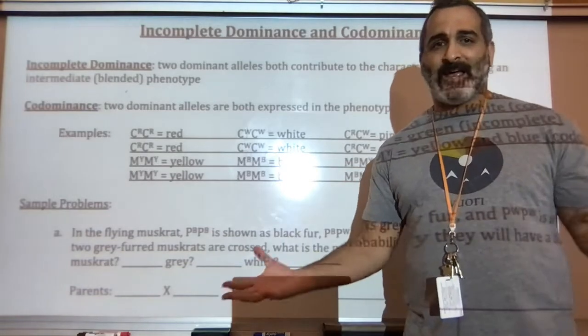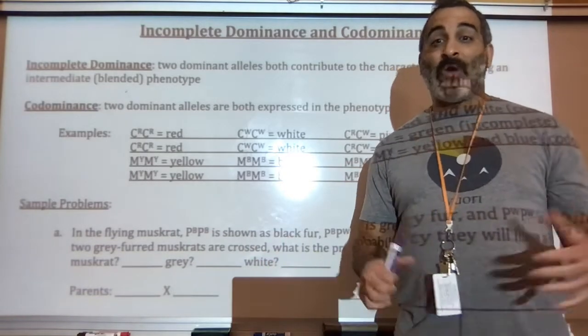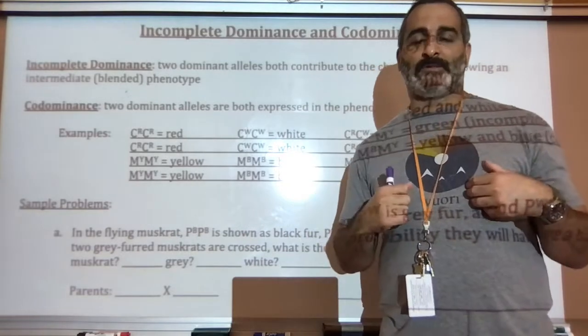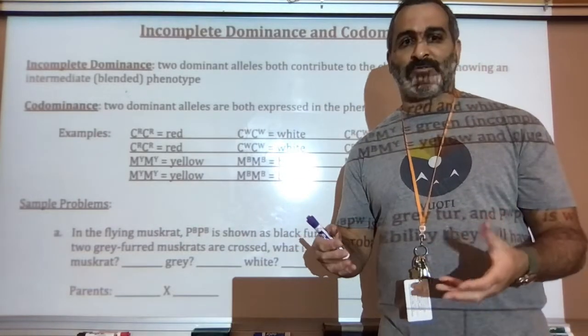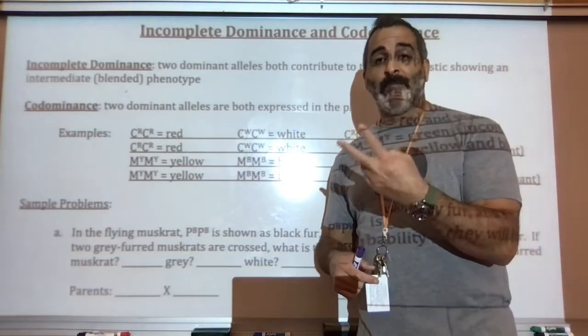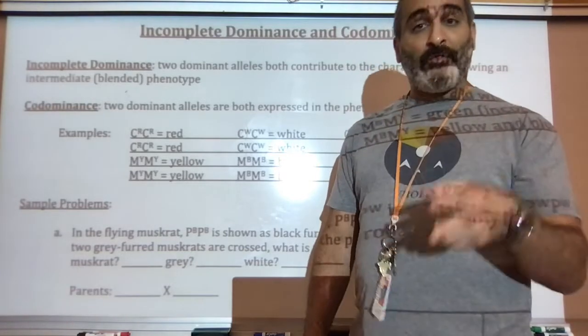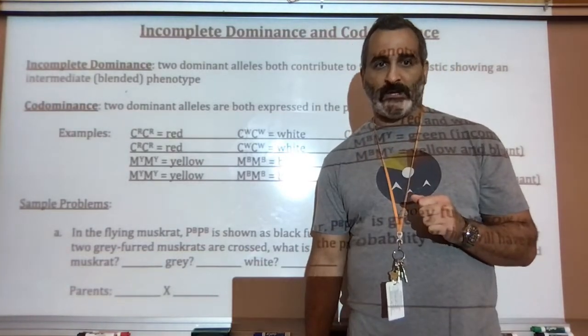In these types of genetics crosses, we don't have complete dominance. Both alleles, so you're going to have two different alleles, two different genes, and both of them are actually dominant in this case.